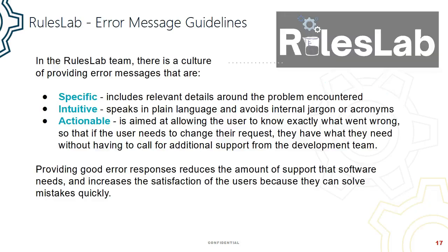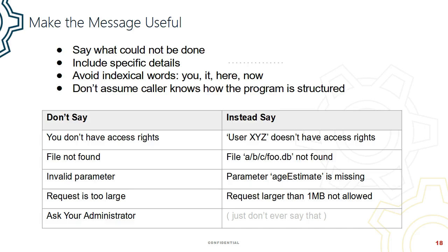Here are some guidelines that have been in the rules lab for a long time: be specific with relevant details around the problem that was encountered. Speak in the language of the user, aimed at showing exactly what went wrong, so that if the user needs to change the request, they have what they need without having to call for additional support. For example, don't say 'you don't have access rights' — say 'user XYZ doesn't have access rights.' Or mention the actual file or actual parameter that was found to be invalid. And if the request is too large, mention what it means to be too large.